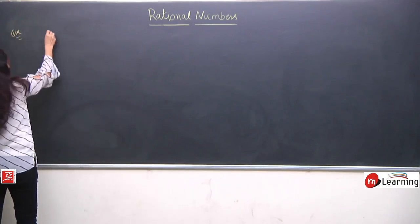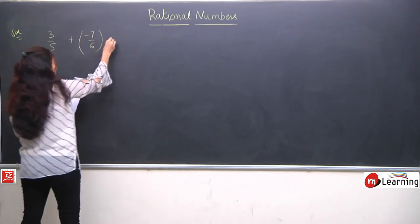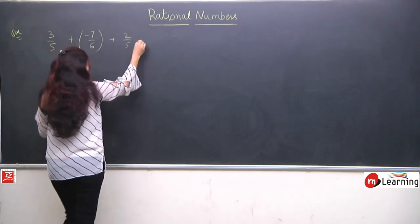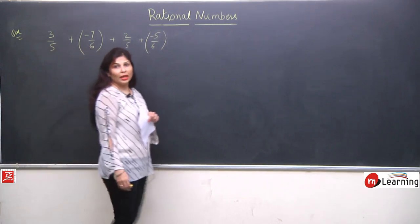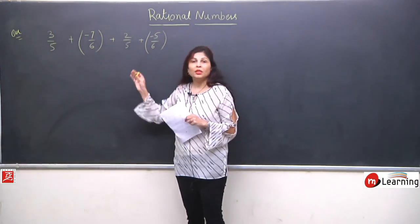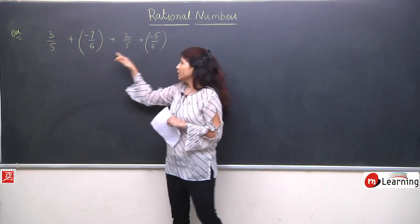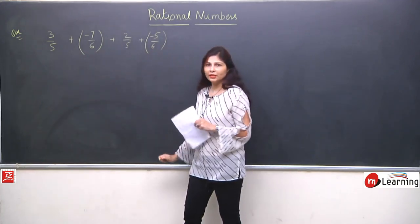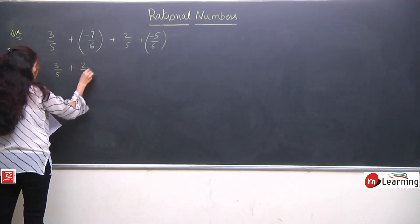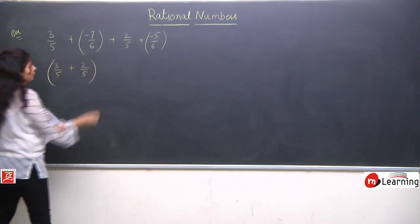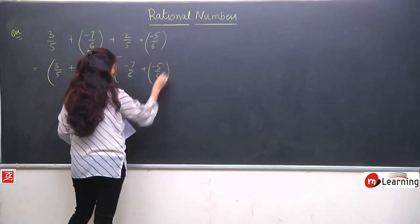The example is: 3/5 + (-7/6) + 2/5 + (-5/6). First, observe carefully — this question has different denominators but some are the same also. So what we will do: we will collect the same denominators on one side and the other denominators on the other side. Like 3/5 + 2/5, these two will collect on one side, and -7/6 + (-5/6) on the other side.